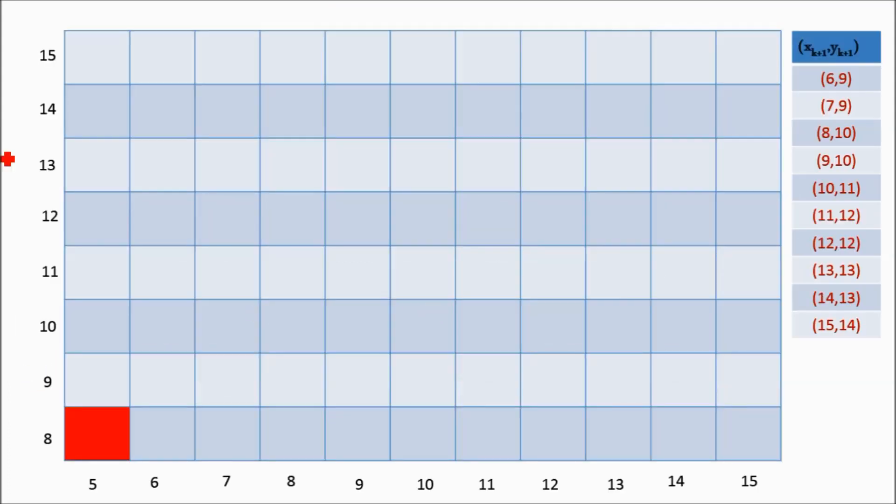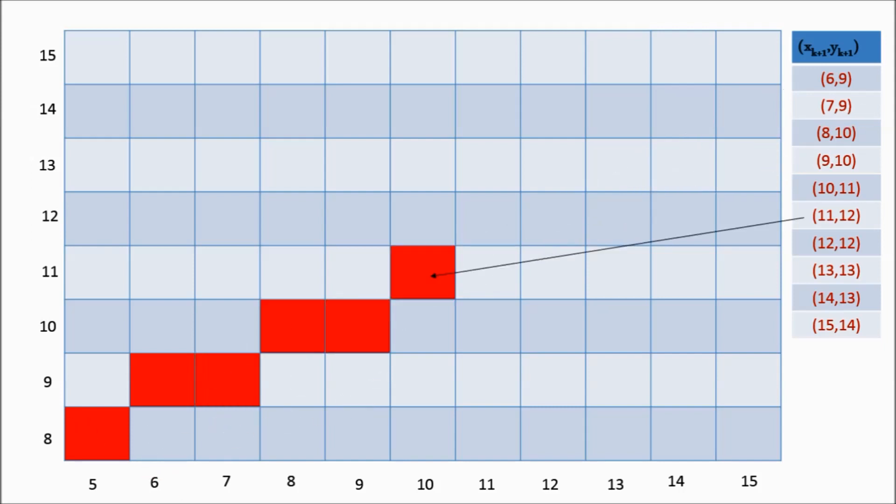After calculation, you must plot the raster. You must plot all the pixels. First pixel is (5, 8). Next pixel is (6, 9), then (7, 9), then (8, 10), (9, 10), (10, 11), and so on. All the pixels are plotted in the raster.